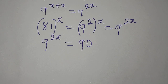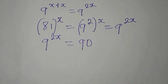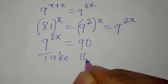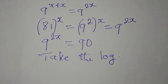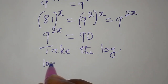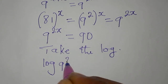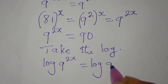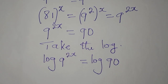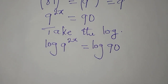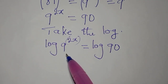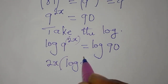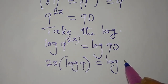Now, we take the log of both sides. We have log of 9 to the power of 2x equal to log of 90. Applying the power rule of logarithms, the power comes down in front: 2x times log 9 equals log 90.